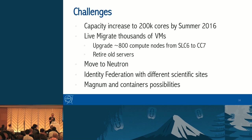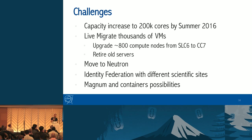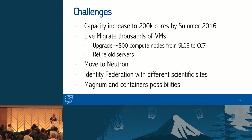Our challenges for the next months: we will increase capacity to 200,000 cores by summer 2016. We need to live migrate thousands of VMs to upgrade 800 compute nodes from SLC6 and to retire end-of-life servers. We want to move to Neutron. We are also working on federation with other scientific institutes and looking into Magnum and container possibilities. Thank you so much.